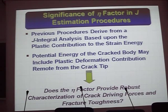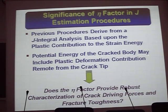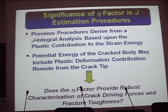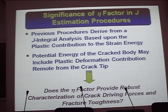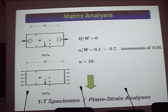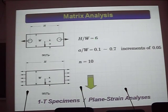All these previous procedures derive from a J-integral analysis based on the plastic contribution to the strain energy. One of the problems is that the potential energy of the cracked body may include plastic deformation which is remote from the crack tip. If it is remote from the crack tip, it may mask the contribution to J. The question pursued in this work is: does the EDA factor provide a robust characterization of crack driving force and toughness? We did a simple plain strain analysis over several configurations — pin-loaded and clamped.